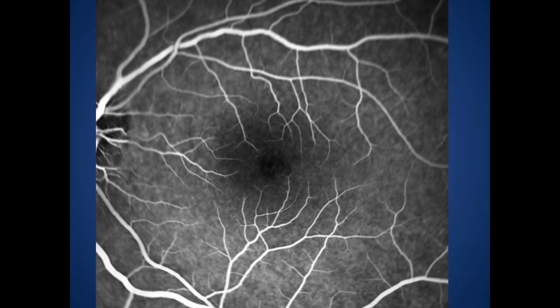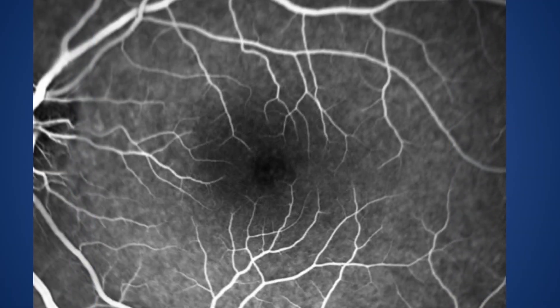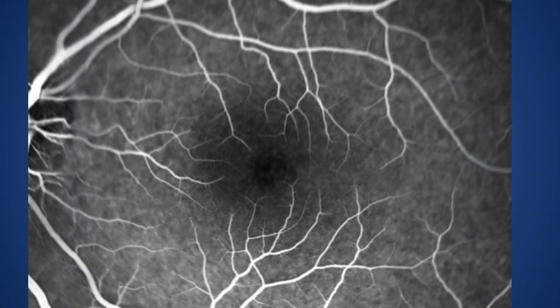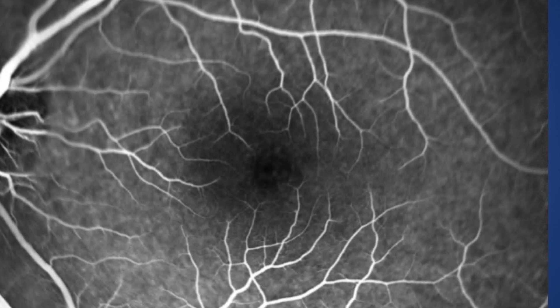This is a frame of the fluorescein angiogram of the arteriovenous phase of the left eye, showing areas of central hypofluorescence surrounded by areas of mild hyperfluorescence. This is a close-up picture of the fluorescein angiogram.